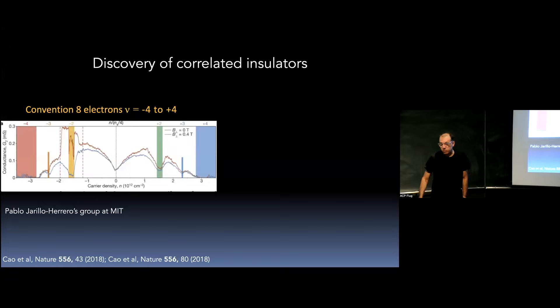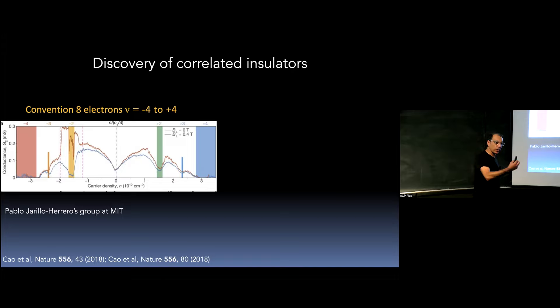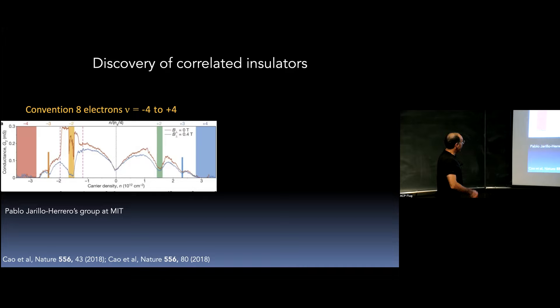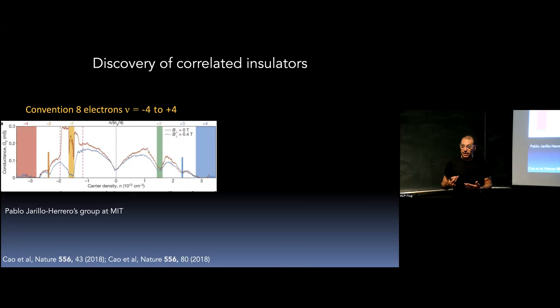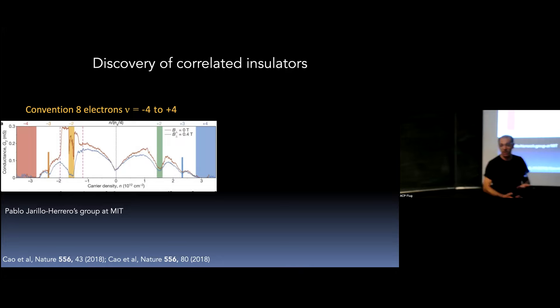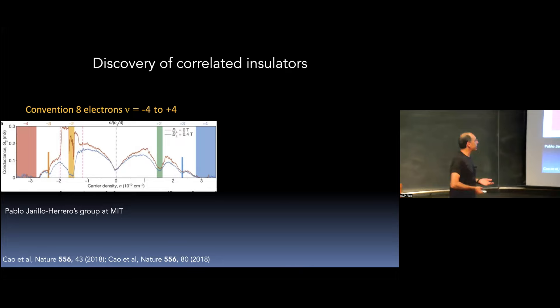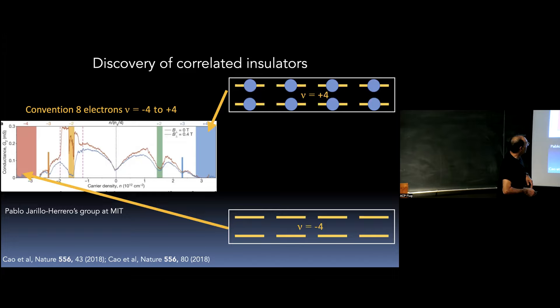The big discovery came in 2018 from Pablo Jarillo-Herrero's group at MIT. He created the structure that Allan MacDonald had predicted — sheets of graphene stuck on top of one another, precisely misaligned at one degree. This is measuring conductivity as a function of carrier density. The nice thing about these devices is that we can tune how many electrons we have by using an electrical gate capacitively coupled underneath the structure.